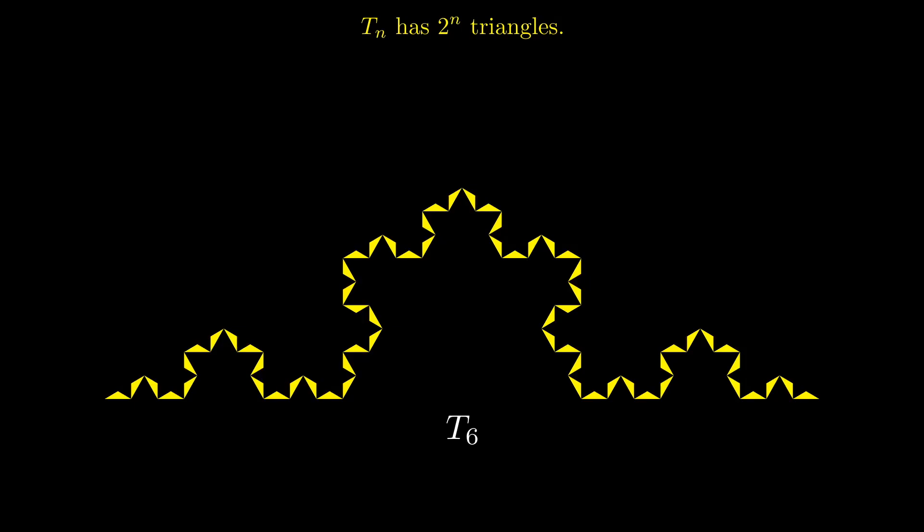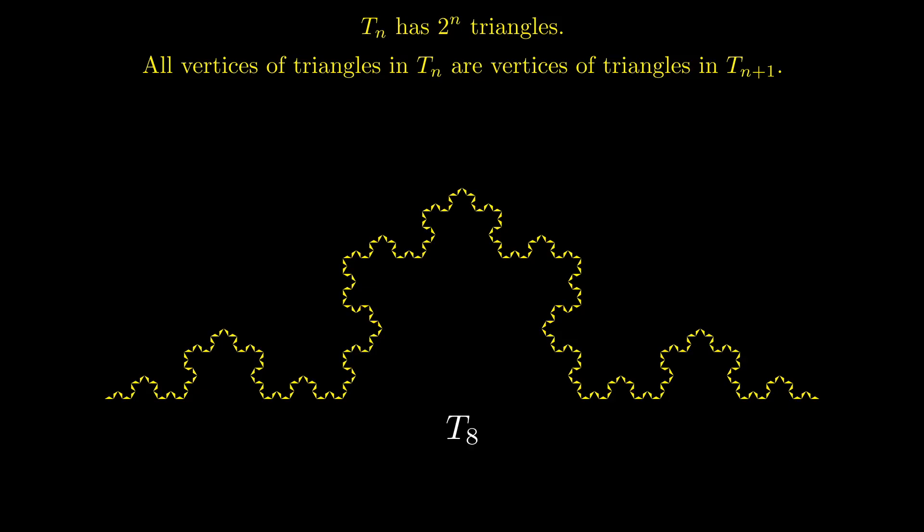All of the vertices of the triangles in Tn will also be vertices of the new triangles in the set Tn plus 1. In addition, both the length of the base and the area of the triangles in Tn will decrease towards zero as the number of iterations increases.